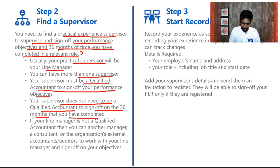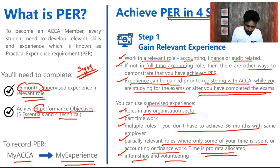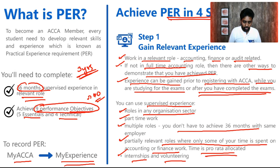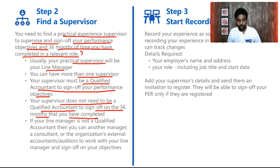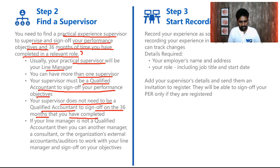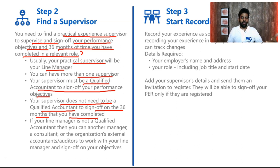There are two things to sign off: the time (36 months) and the nine performance objectives (POs). Your supervisor who signs your performance objectives must be a qualified accountant — specifically an IFAC member. IFAC-qualified accountants include CAs, CPAs, ACCAs, CPA Australia, CPA Canada, and anyone with a professional accounting qualification within IFAC. A majority of qualified accounting professionals who are IFAC members can sign off on your performance objectives.